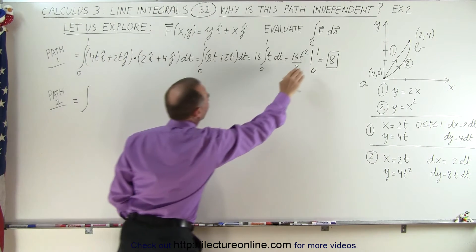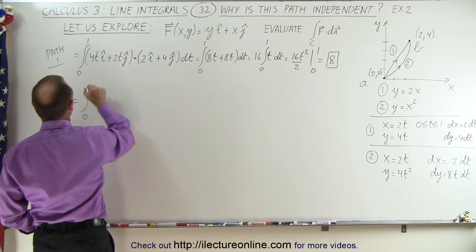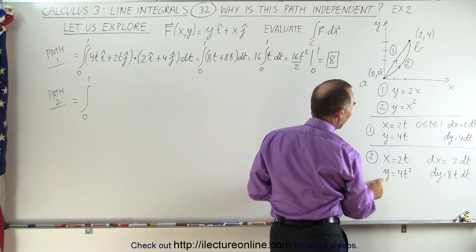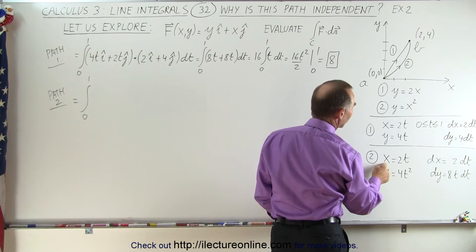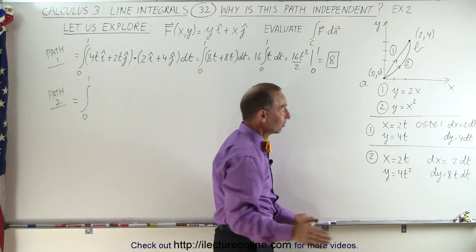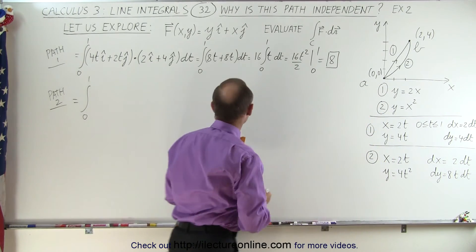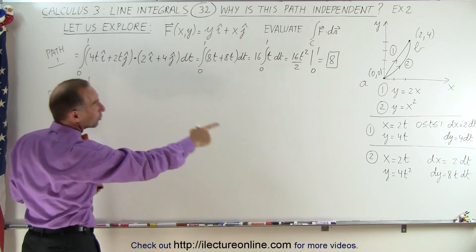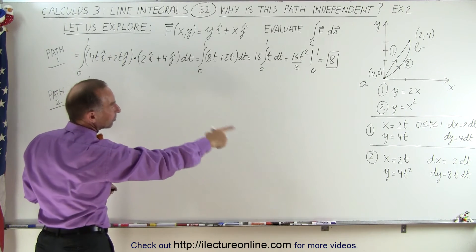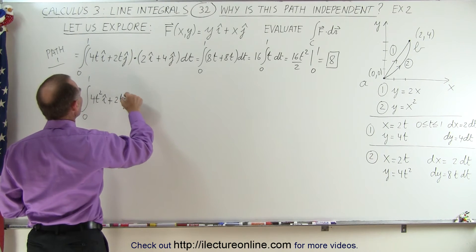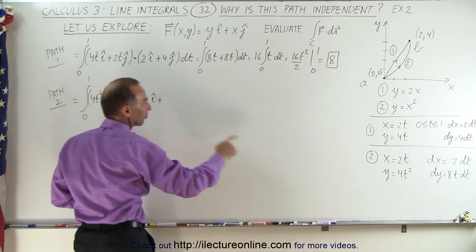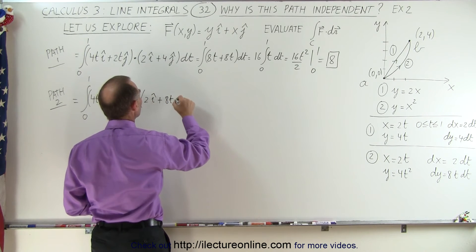Now for path 2, we evaluate f dot dr from 0 to 1. Using a quadratic parametrization: x = 2t and y = 4t squared, so when t = 1, x = 2 and y = 4, which lands at point (2,4). Therefore dx = 2 dt and dy = 8t dt. Plugging in: y = 4t squared in the i direction plus x = 2t in the j direction, dot product with dr = 2 dt in the i direction plus 8t dt in the j direction.